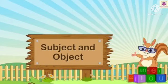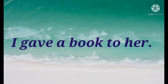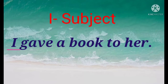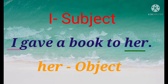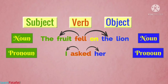While we use pronouns in a sentence, we have to keep in mind the subject and the object. The subject is the one that performs the action, and the object is the one that receives the action. For example: 'I gave a book to her.' Here, 'I' is doing the action, so the subject pronoun is 'I,' and 'her' is receiving the action, so the object pronoun is 'her.' Similarly, in 'The fruit fell on the lion,' the subject is 'the fruit' and the object is 'the lion.'